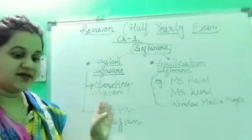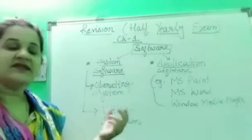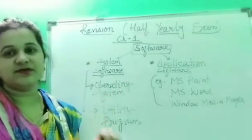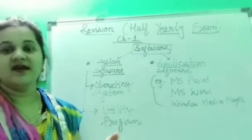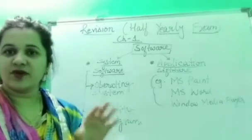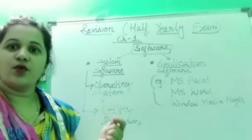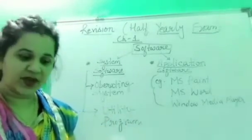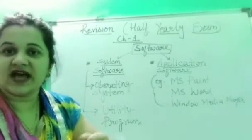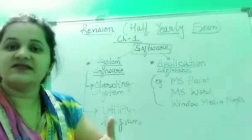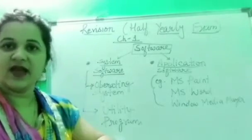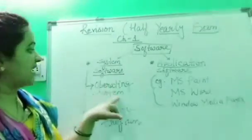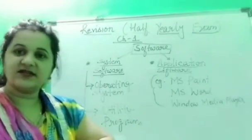Utility programs are small programs that are inbuilt and help in the smooth running of an operating system. Examples of operating systems are Windows 8 and Windows 10 — your laptop has a Windows operating system. To make the operating system work effectively we use utility programs like antiviruses, and if we want to reduce file size we use zip software. So utility programs help in the smooth working of an operating system.